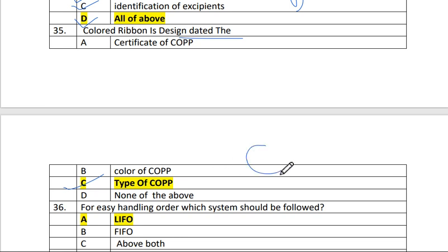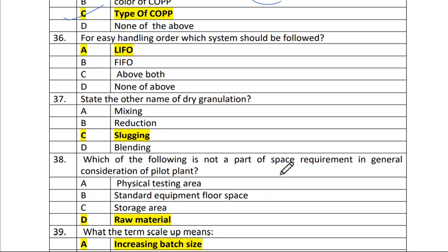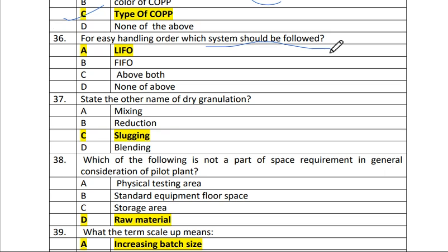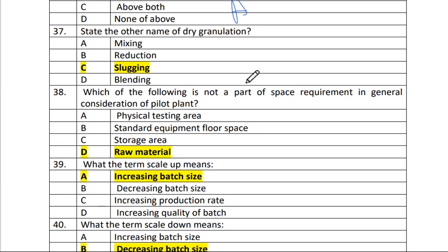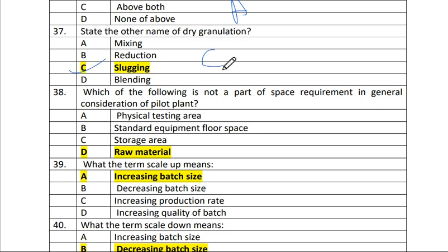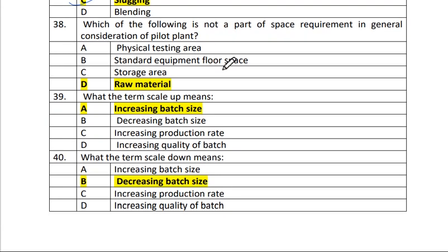Question 36: For easy handling order, which system should be followed? The answer is A — LIFO. Question 37: State the other name of dry granulation. The answer is C — slugging.